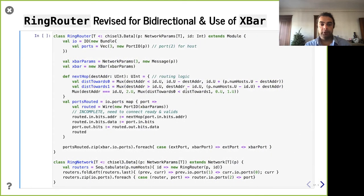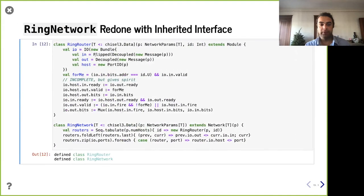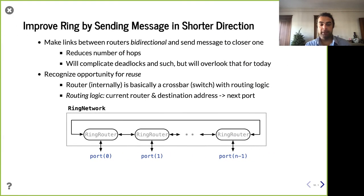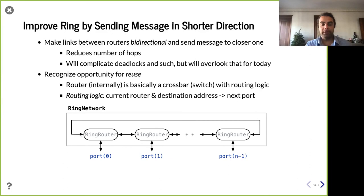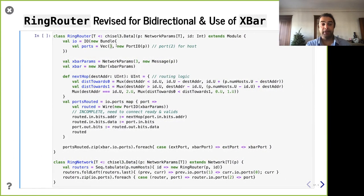Think about what a router really is — it's two things: the switch, which is basically a crossbar connecting input ports to output ports, and the routing logic, which given a message and its final destination, figures out which output port will get it closer. So for a bidirectional ring router, instead of one input and one output, we now make three bidirectional port IOs. Port zero goes to the lower end, port one goes to the higher end, and port two is the one that goes to and from the host.